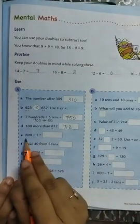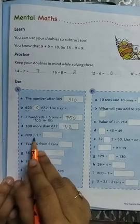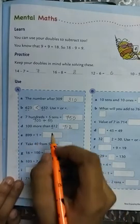899 plus 1. The number that comes after 899 is 900.